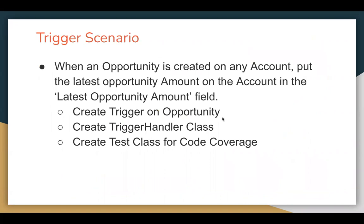Let's understand the requirement of this trigger scenario. When an opportunity is created on any account, we need to put the latest opportunity amount on the account in the latest opportunity amount field. We need to create this field on the account. Whenever we create any new opportunity on that account, that opportunity's amount should be available in latest opportunity amount. And if you create one more opportunity later, the newly created opportunity's amount should be populated. If it is null or blank, the existing value should remain.